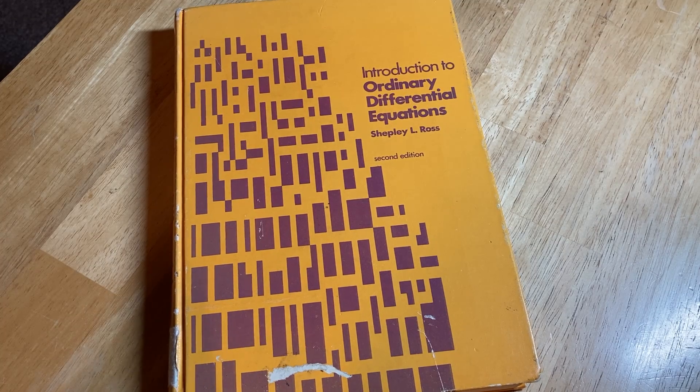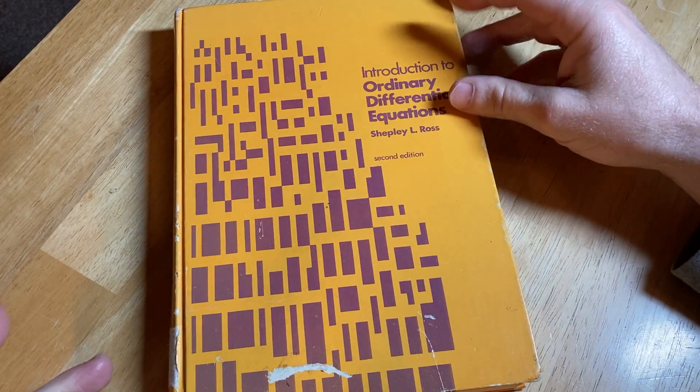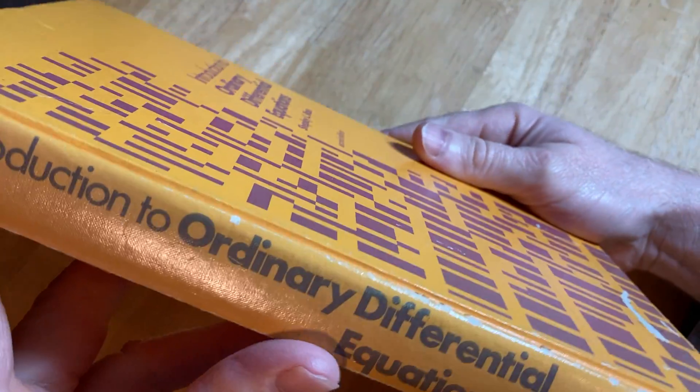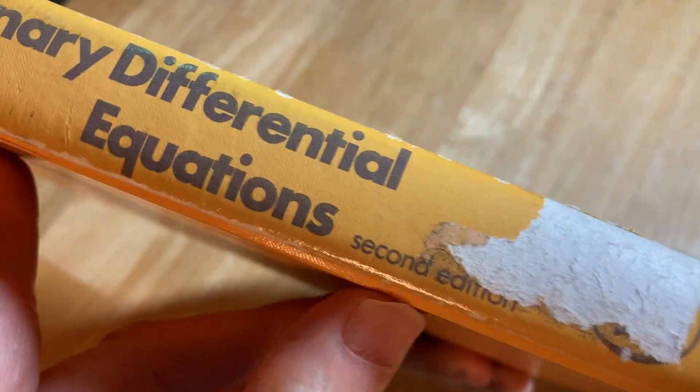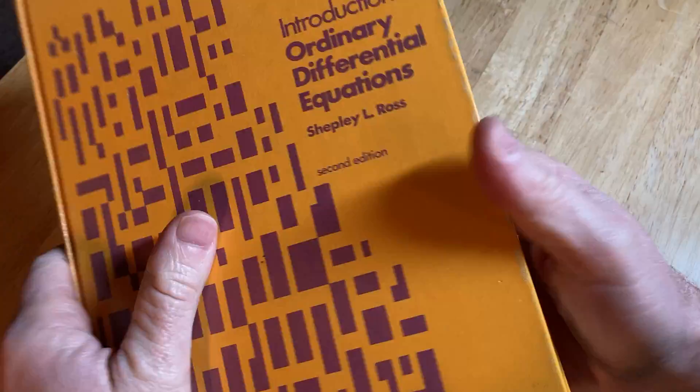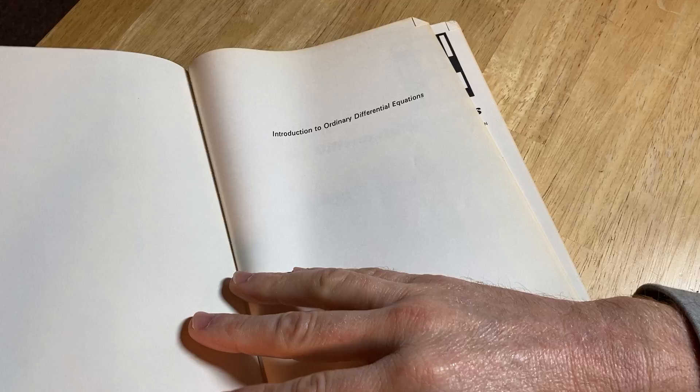This is a math book. It's a book on ordinary differential equations, and it was written by Shepley L. Ross. It's a hardcover, and this one is the second edition. Nice thick book. It's got a good weight to it. Let's open it up and take a look at what it has.